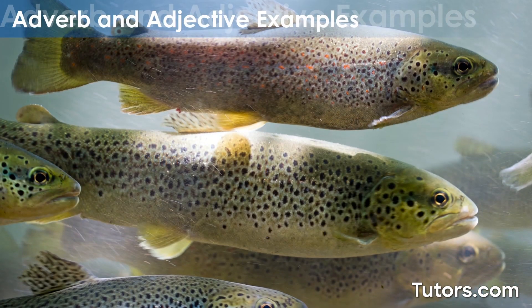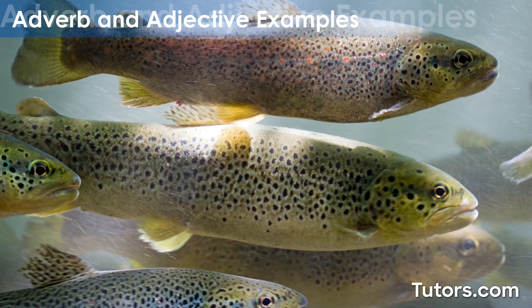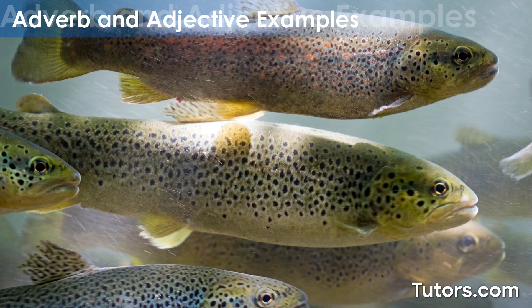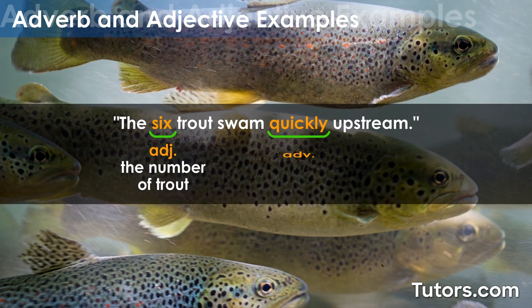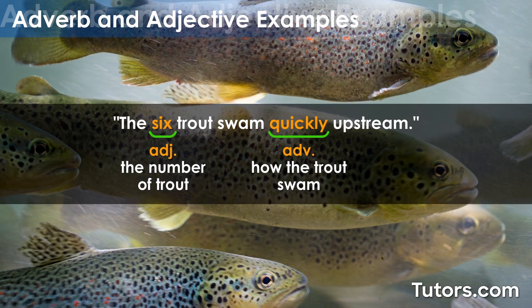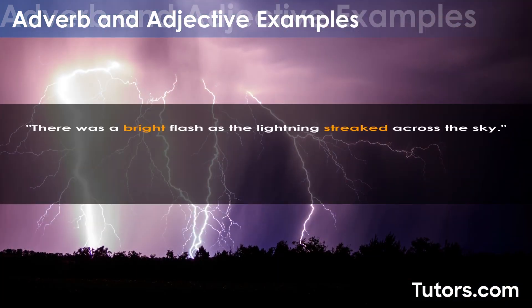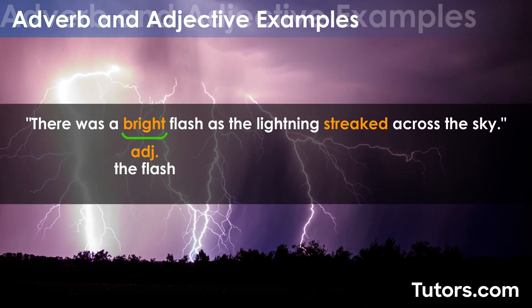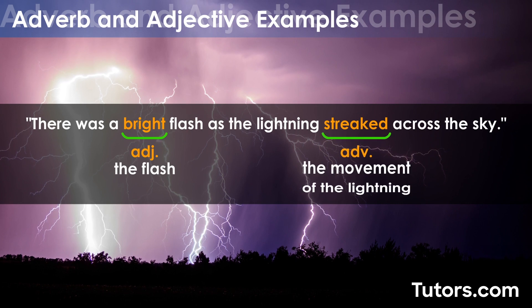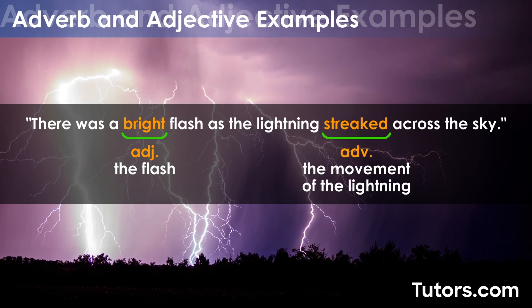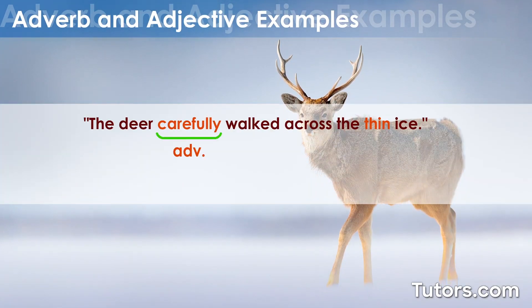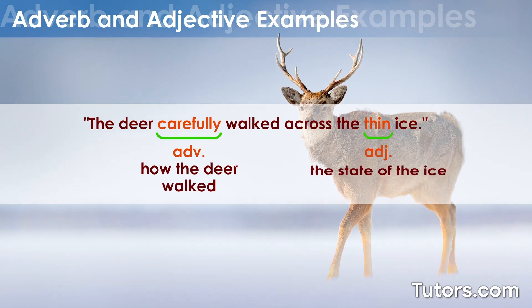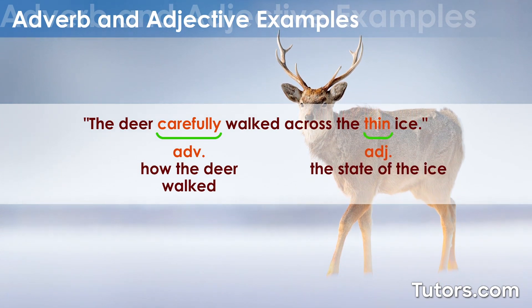These example sentences contain both adverbs and adjectives. The six trout swam quickly upstream. There was a bright flash as the lightning streaked across the sky. The deer carefully walked across the thin ice.